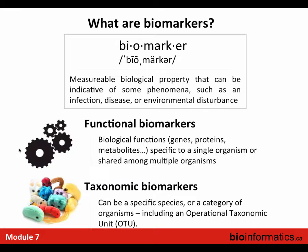What are biomarkers? A common definition is that they are measurable biological properties indicative of some phenomenon, such as an infection, disease, or environmental disturbance — essentially a marker of some sort of biology. In microbial analysis there are two main types: functional biomarkers, where you're looking at biological functions such as genes, proteins, or metabolites specific to an organism or community; and taxonomic biomarkers, which are very popular particularly with 16S or amplicon-based analyses, specific to a certain species, taxon, OTU, or other grouping of organisms.